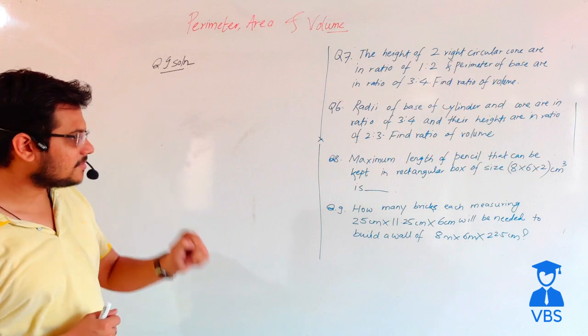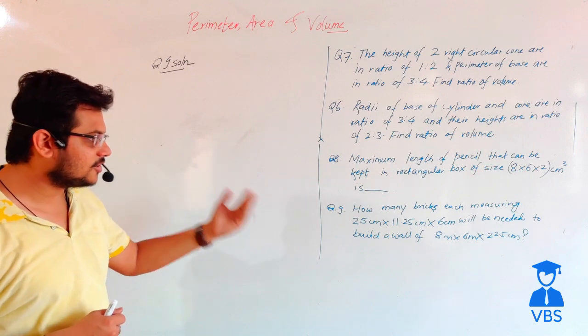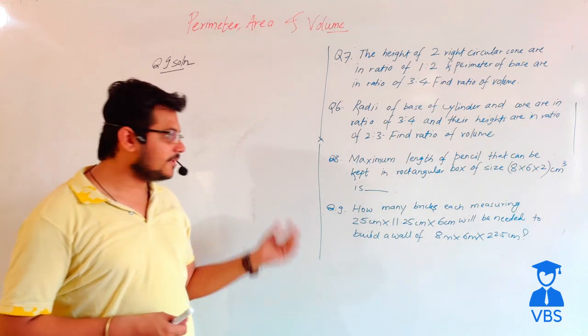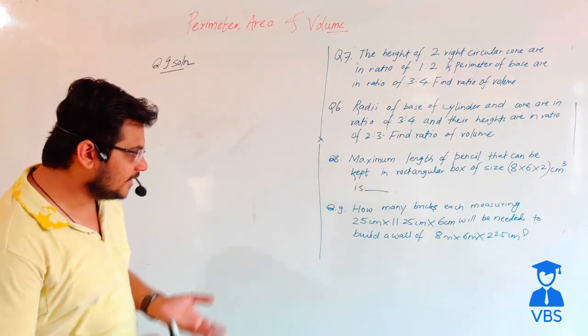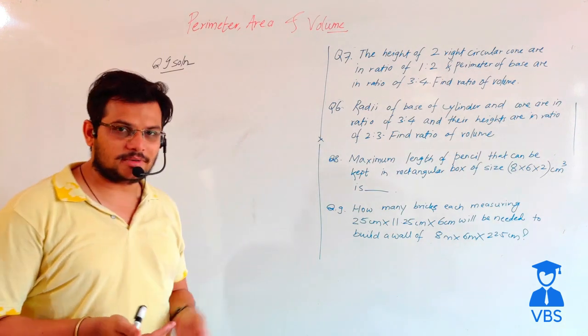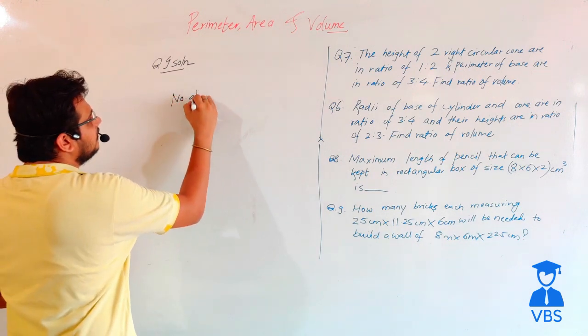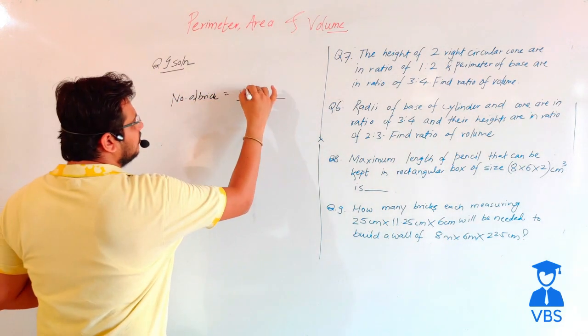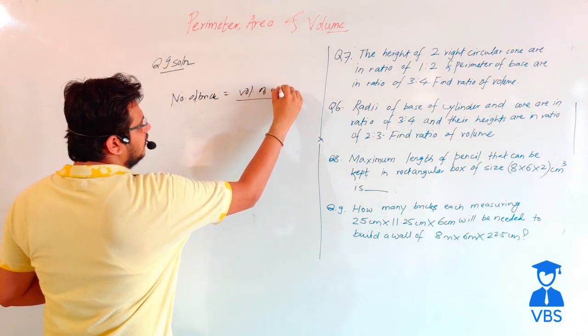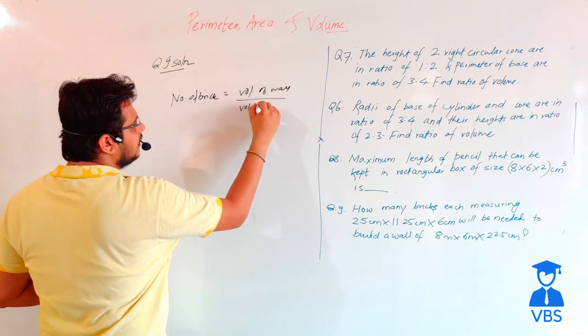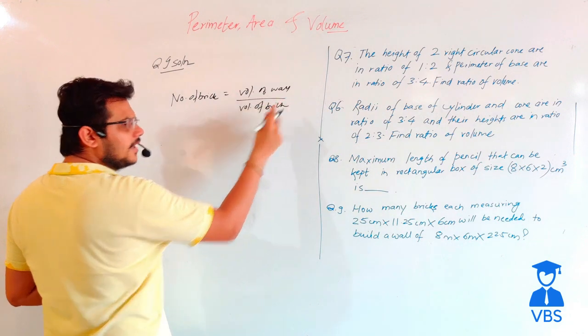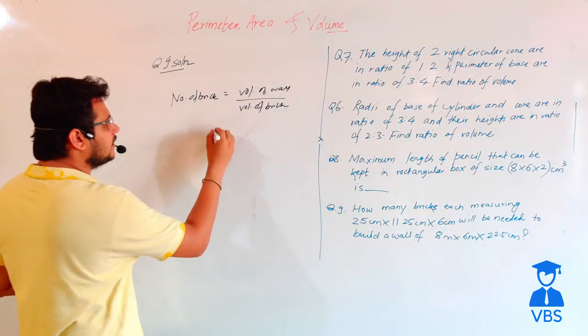How many bricks measuring 25 cm by 6 cm will be needed to build up a wall? So how many bricks is equal to volume of wall divided by volume of brick? This is very straightforward because there is no problem.